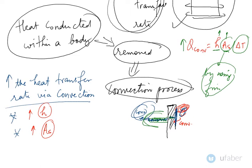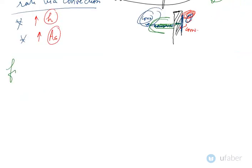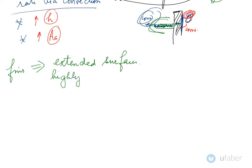By using fins we increase surface area. Fins are nothing but extended surfaces — extended surfaces made up of highly conductive material. These materials include aluminium, and fins are manufactured with the help of processes like extrusion. You can also weld the extended surfaces onto the base surface.